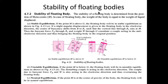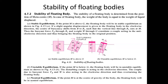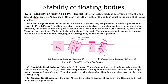We need to find under what conditions a floating body like a ship will be stable, because we don't want the ship to overturn — that would damage passengers, cargo, and the ship structure. Metacenter plays an important role in the stability of floating bodies. The stability of a floating body is determined from the position of the metacenter.